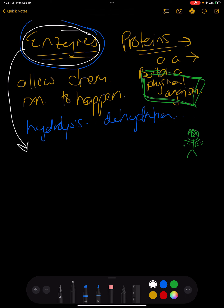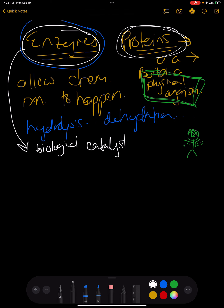Enzymes are biological catalysts. Biological refers to something living, and a catalyst is a chemical you would use in chemistry class to make a reaction happen. Since enzymes are found in living things, that's why they're called a biological catalyst.